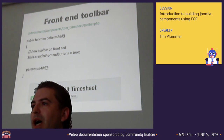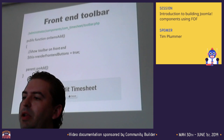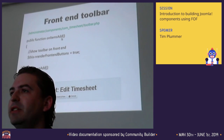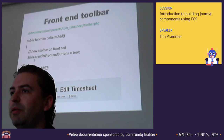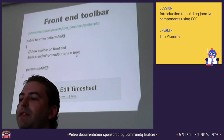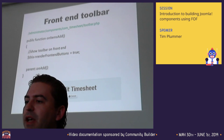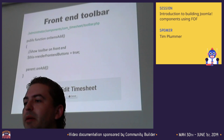For the front end toolbar, it's really easy to implement. You just go into toolbar.php in the back end and create a function for the type of view - for example, onItemAdd for when you're adding a new item. The key line that allows the toolbar to appear in the front end is: this.renderFrontendButtons = true. If that line isn't there, the toolbar won't appear on the front end. Otherwise, FOF does everything else automatically and you can add extra buttons just like in the back end.